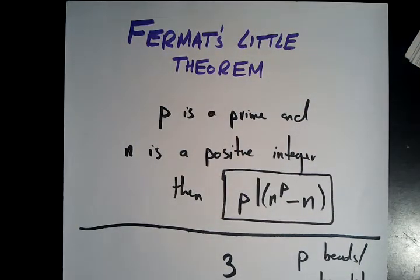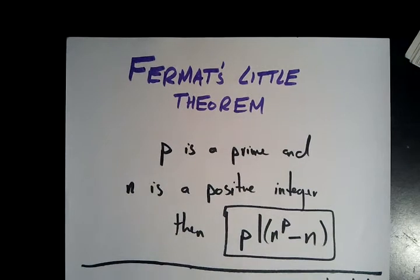We're going to be talking about Fermat's Little Theorem, and for simplicity, I've written most of the instructions out. So first is just the statement of the theorem. It's a very simple statement. It says if p is a prime and n is a positive integer, then p divides n to the power of p minus n.